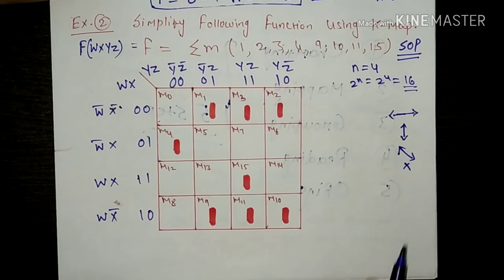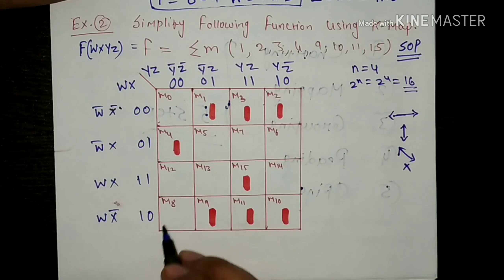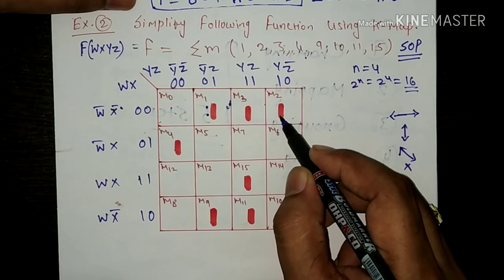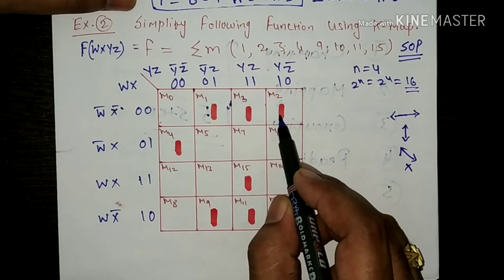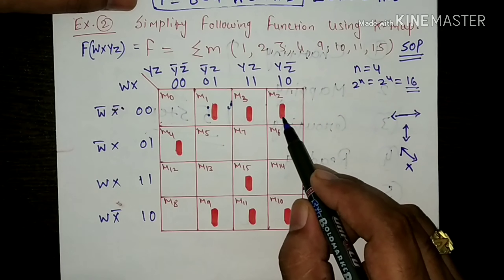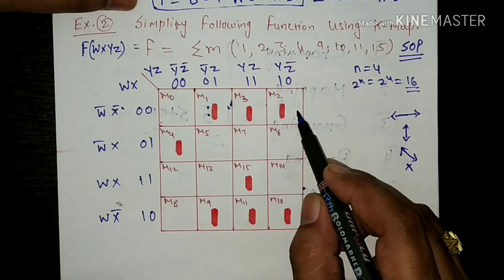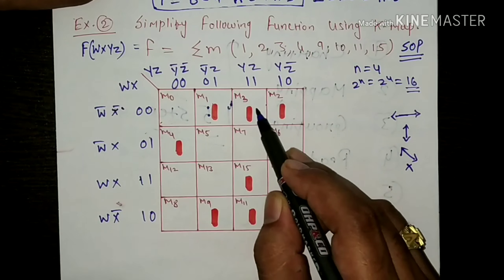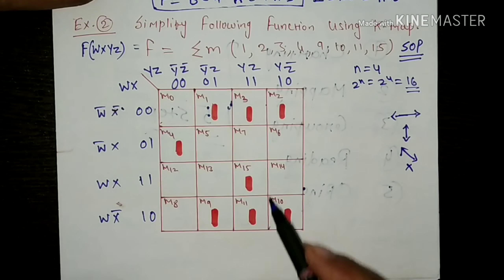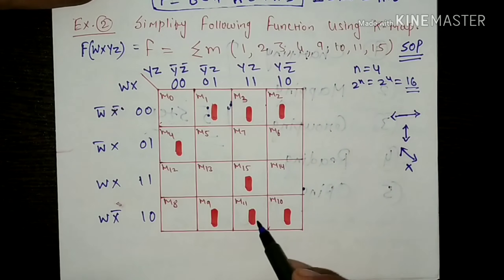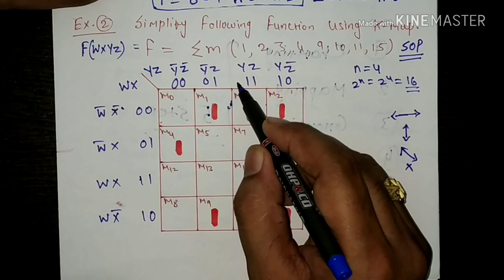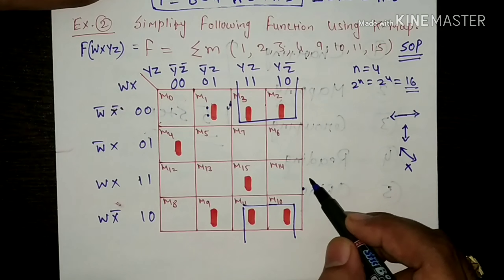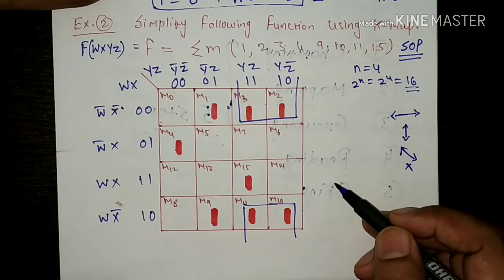Let us try to make the groups. सबसे पहले मैंने देखा कि यदि मैं इन ones की grouping करता हूं - यह दो ones हैं तो मैं एक pair बना सकता हूं, but मुझे देखना है कि pair बनाने की जगह quad यदि बनता है तो वो preferable है. So, because corner cells adjacent होते हैं, यह दो cells इन दो cells के adjacent हैं. So इन दो ones को इन दो ones के साथ grouping कर सकता हूं, and it will form a quad rather than a pair. So guys, जब भी आप pair बना रहे हैं, तब देख लीजिए कि वहाँ पर quad बनाने की possibility है या नहीं.